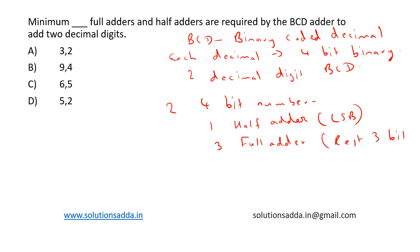This is the first part. Now, after adding, to make the resultant sum a valid BCD sum, we need to add 0110 to the sum. This correction step can be done using one half adder and two full adders.